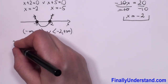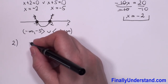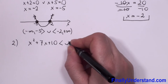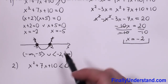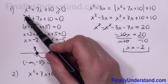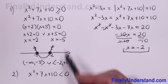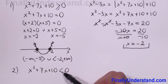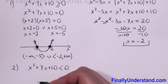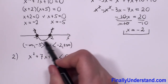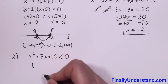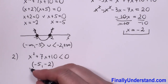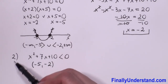Now we go to the second case. The expression between the absolute value bars, x squared plus 7x plus 10, must be less than zero. Using the same graph, the values less than zero are between the roots: from negative 5 to negative 2. Since we have a strict less-than inequality, this is an open interval. This open interval from negative 5 to negative 2 is our domain for Case 2.